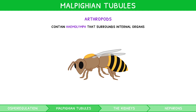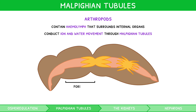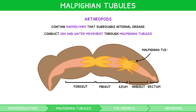Most arthropods conduct the movement of ions and water out of this fluid through the Malpighian tubule system, which regulates solute concentration. The tubule system is connected to the arthropod's alimentary canal, which consists of a long continuous tube divided into a foregut, midgut, ileum, hindgut and rectum. Branching off the ileum are the Malpighian tubules, like tentacles on an octopus.